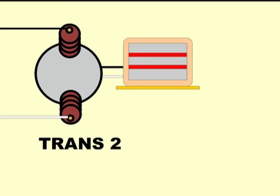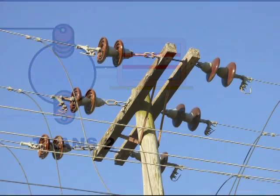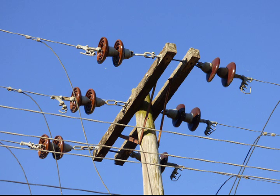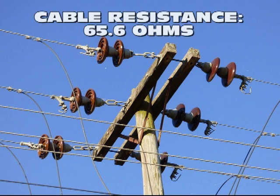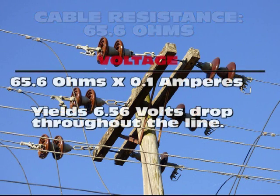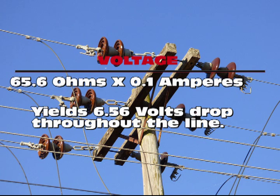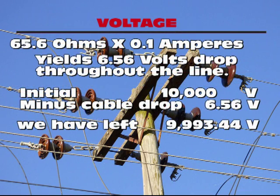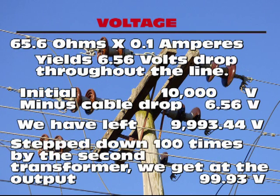The result of raising the alternator voltage 100 times is that a current of only one tenth of an amp is required to carry 1,000 watts, since watts are calculated by multiplying amps by volts. That way, as the resistance of the cable in the round trip is 65.6 ohms, the voltage drop for one tenth of an amp will be 65.6 ohms multiplied by 0.1 amps, which gives us 6.56 volts all along the line. If we subtract that from the 10,000 volts coming from the first transformer, we get 10,000 minus 6.56 volts, so stepping the voltage down 100 times in the second transformer will result in 99.93 volts — and the heater works normally.